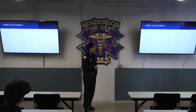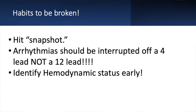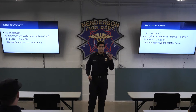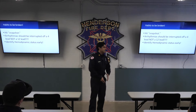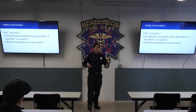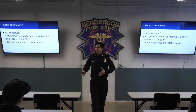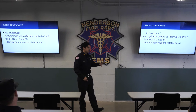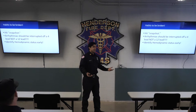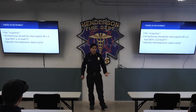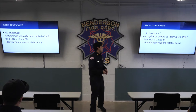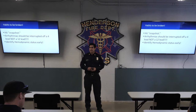Some habits to break. Hit the snapshot on your monitors. We've gotten into the habit of taking a 12-lead and trying to base our arrhythmia interpretation off of it. The most appropriate way would be to hit the snapshot, get 20 seconds of uninterrupted arrhythmia interpretation. That gives us a good foundation — if there are any abnormalities, we can identify them with a 20-second strip. Arrhythmias occasionally get diagnosed off a 12-lead, but that's not the most appropriate way.